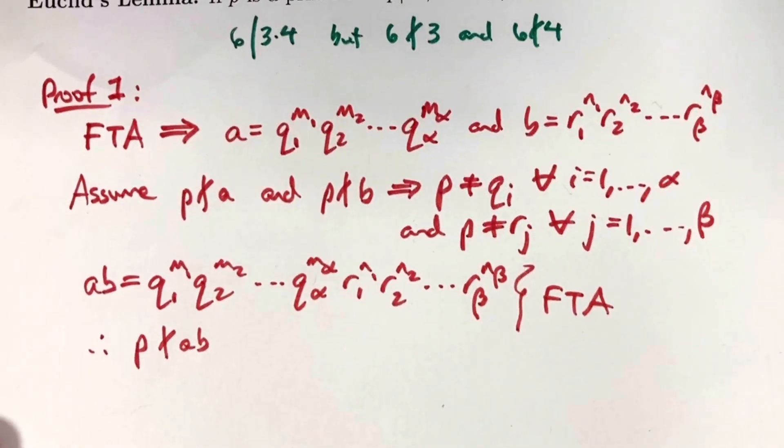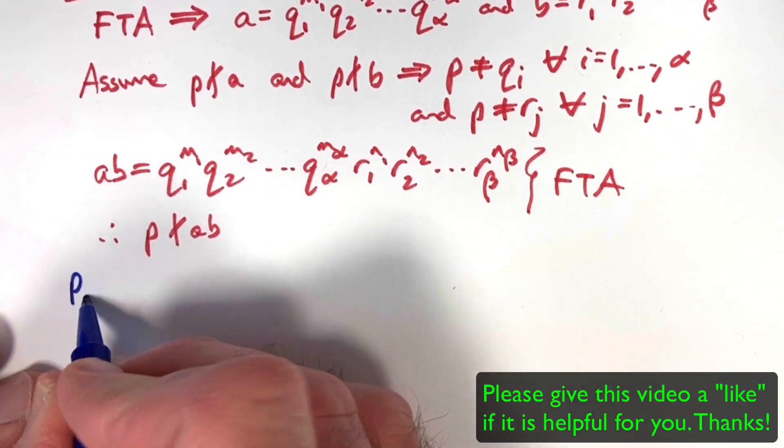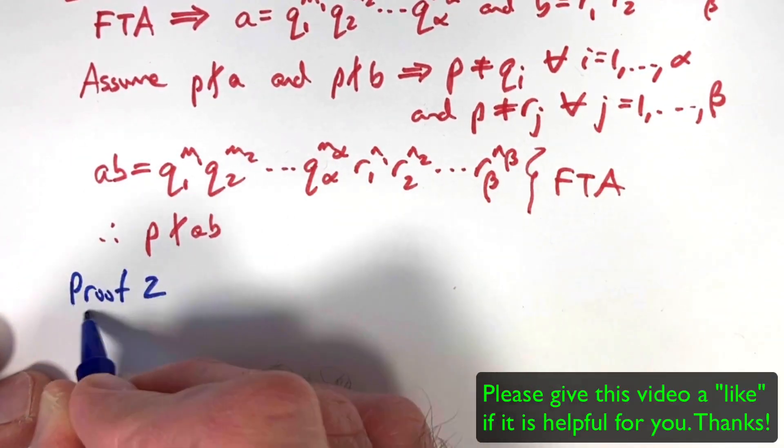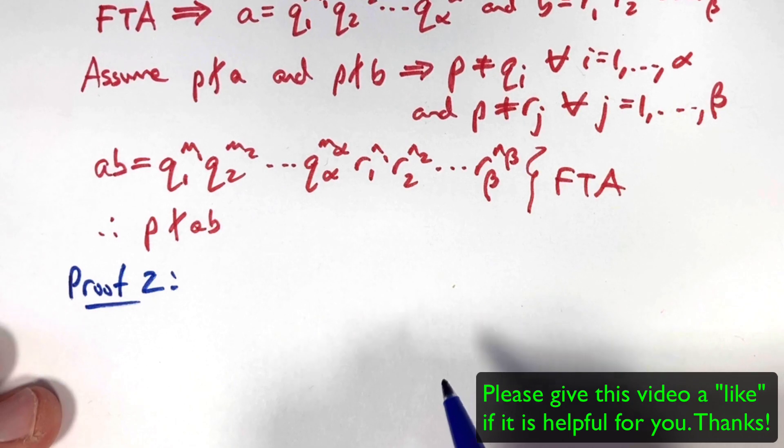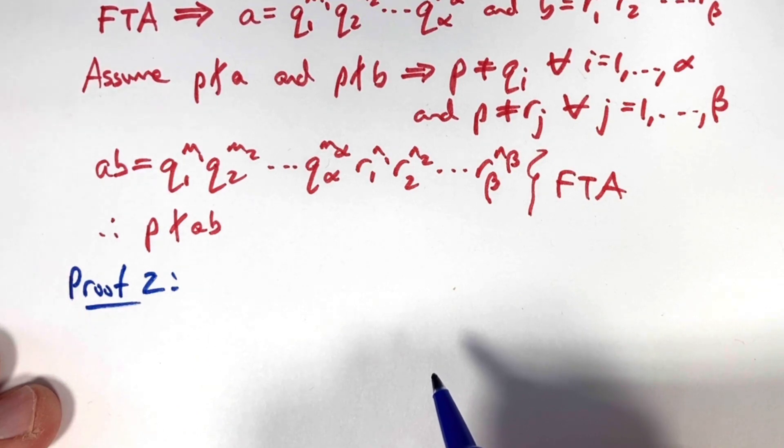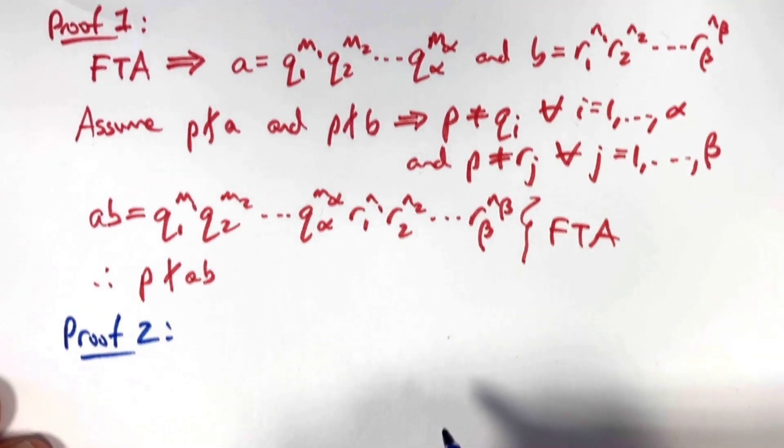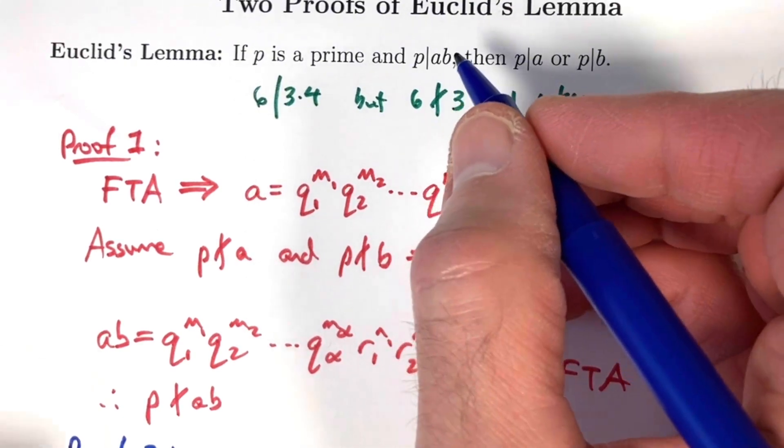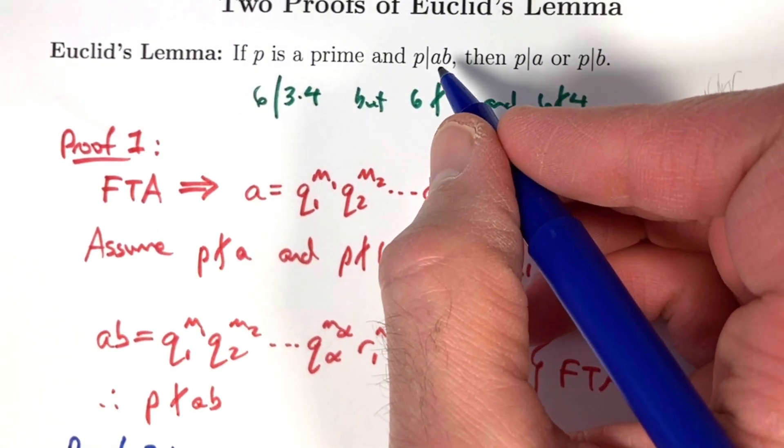Now let's move on to proof 2. Proof 2 is a bit fancier. It uses something called the GCD is a linear combination theorem. The fact that the greatest common divisor of two natural numbers is a linear combination of them. We're going to be doing what's really a direct proof in this case.